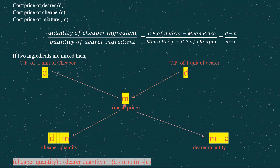In the middle, M simply represents the mean price. Following the arrow from D, you write D minus M — because the price of the expensive item is obviously more than the mean price. On the other side, you write M minus C — because the mean price is obviously more than the price of the cheaper ingredient. So from this diagram you derive the formula.